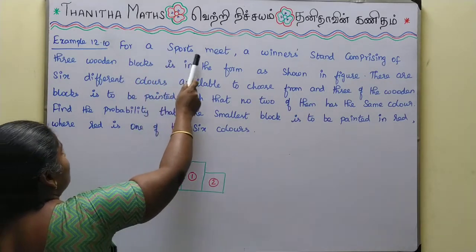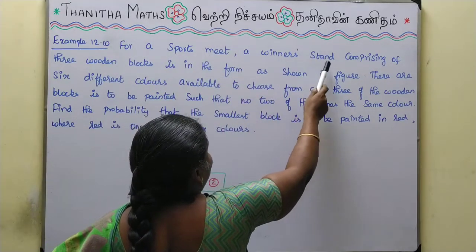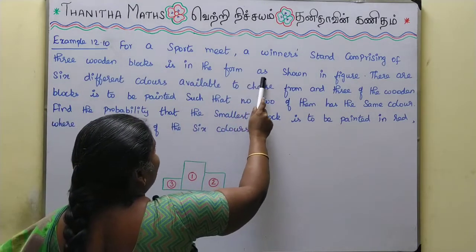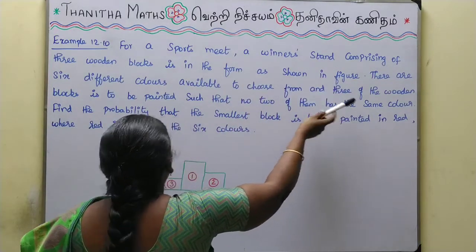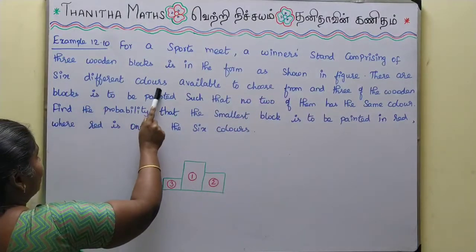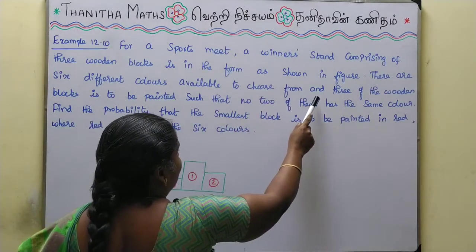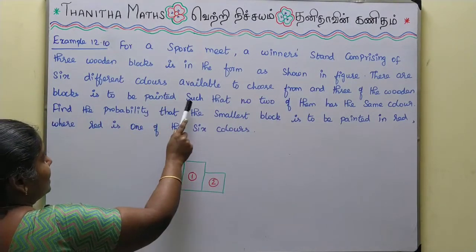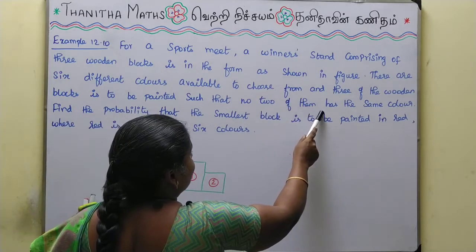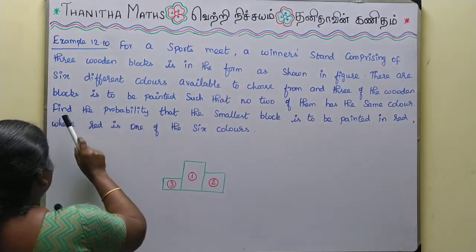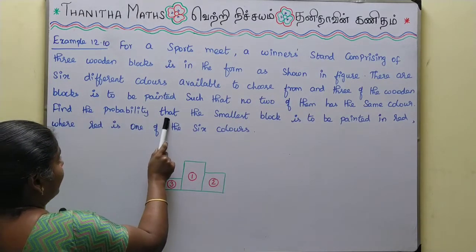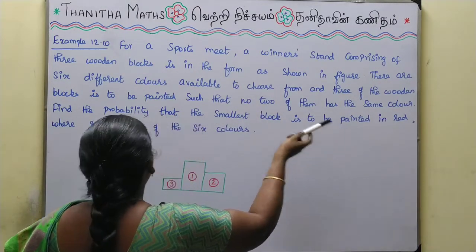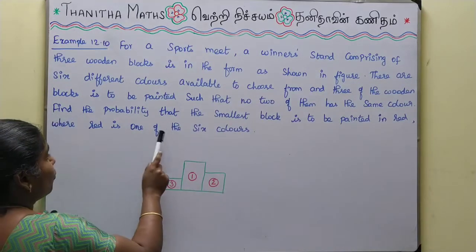For a sports meet, a winner's stand comprising three wooden blocks is in the form as shown in the figure. There are six different colors available to choose from, and the three wooden blocks are to be painted such that no two of them have the same color. Find the probability that the smallest block is to be painted in red, where red is one of the six colors.